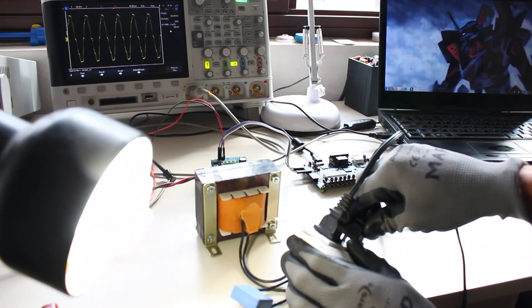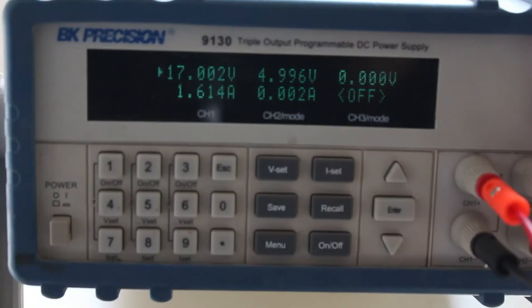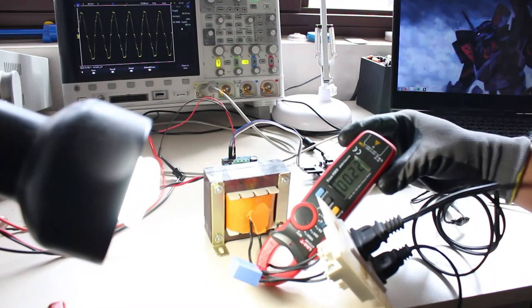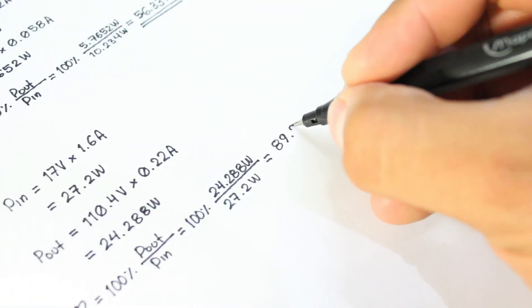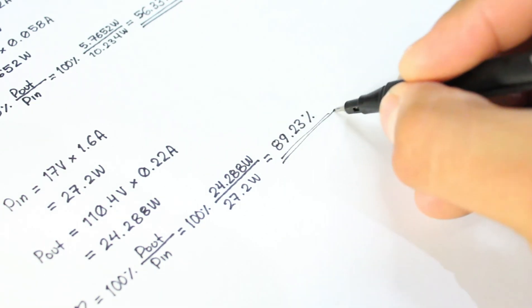Despite my failure, I decided to compute the power efficiency. With the voltage and current reported by the power supply, I get an input power of almost 28W, while the output power is around 24W. With these values, we can readily compute the efficiency, which is 89% approximately. Great!